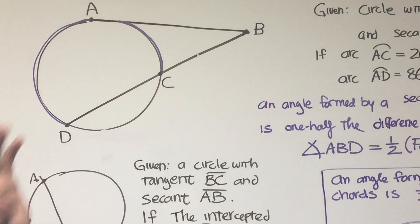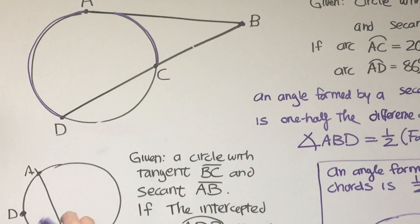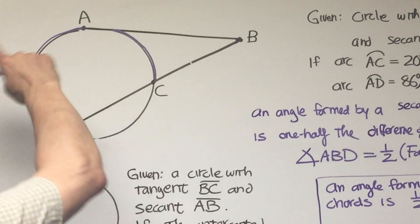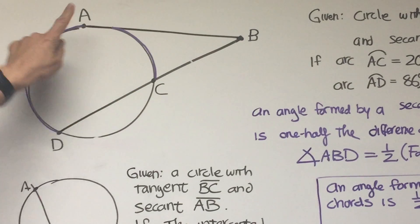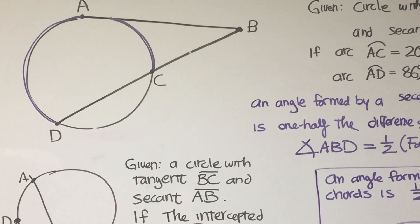Okay, so note that DC is not an intercepted arc. It does not fall inside the span of the circle. So AC and AD are the intercepted arcs.